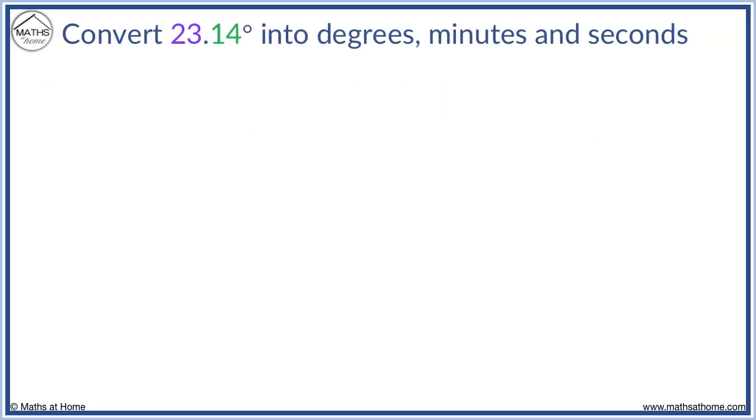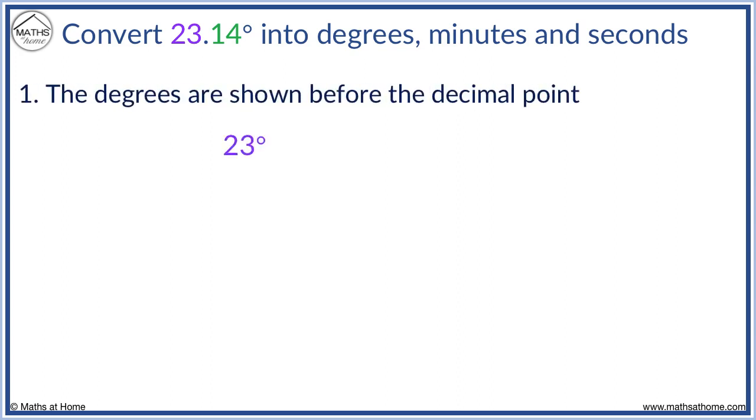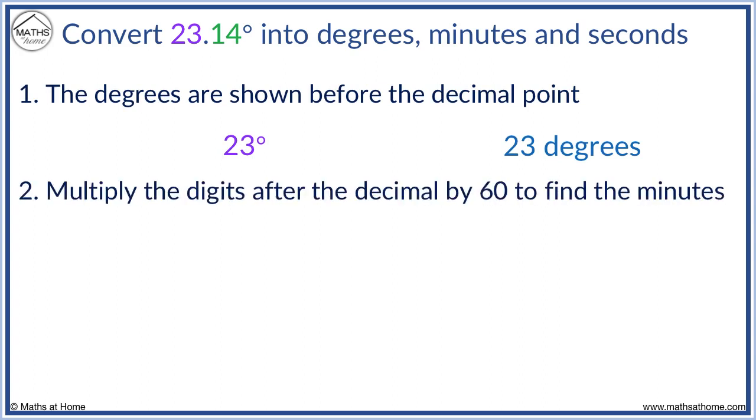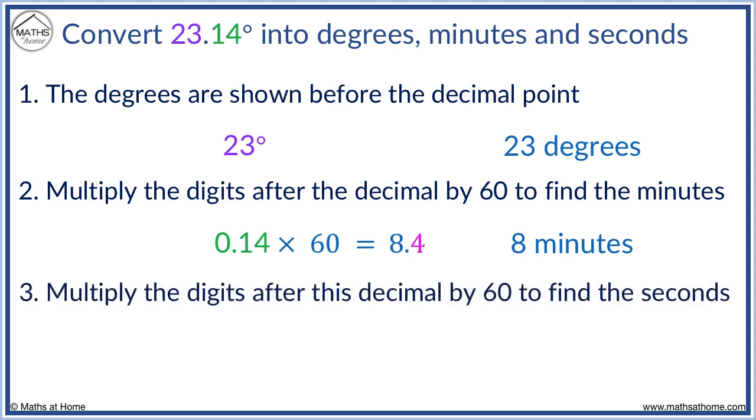Here is another example. We have 23 degrees before the decimal point. We have 0.14 after the decimal point, which we multiply by 60 to get 8.4. Therefore, we have 8 minutes. Now we multiply the digits after the decimal of this result by 60 to find the seconds.